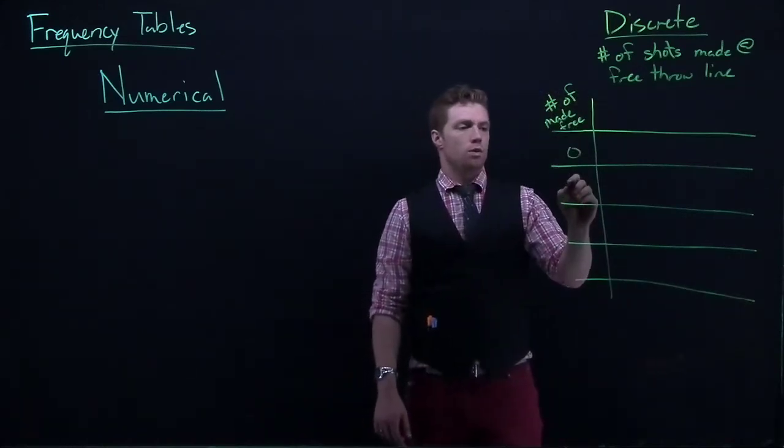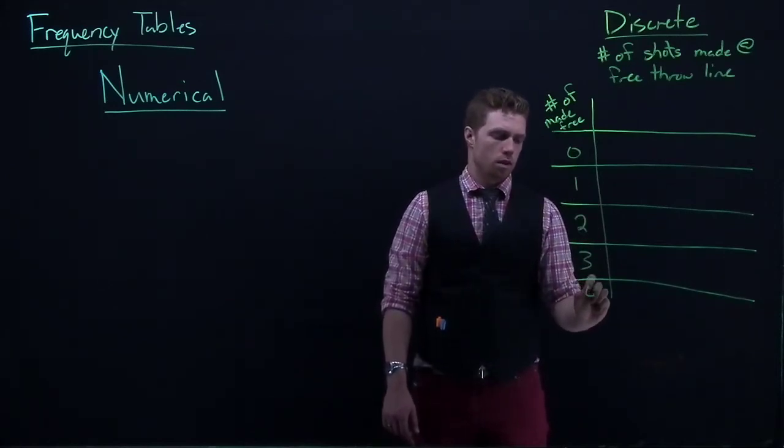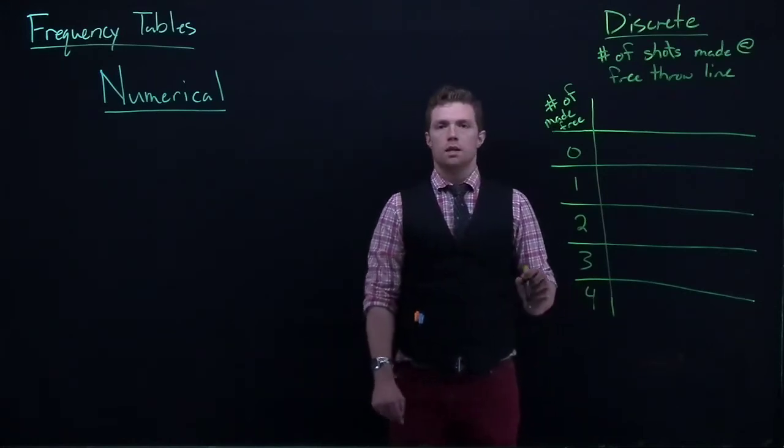Right here I'm going to put as number of made free throws, and I'm going to start putting these down. Maybe it's some bench player who's coming off the bench. They don't shoot from the free throw line a ton. And so for the season, maybe it was 0, 1, 2, 3, and 4.